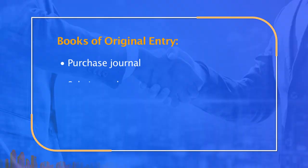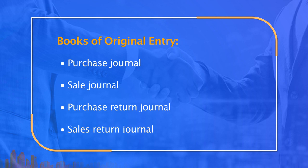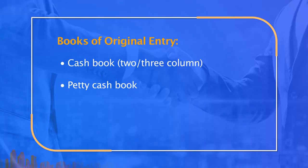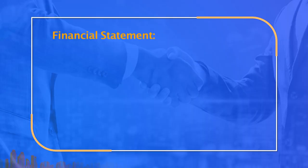The books of original entry include: purchase journal, sales journal, cash book — with two and three column variants — and petty cash book. Books of secondary entry contain the main ledger and subsidiary ledger. Then we have financial statements.